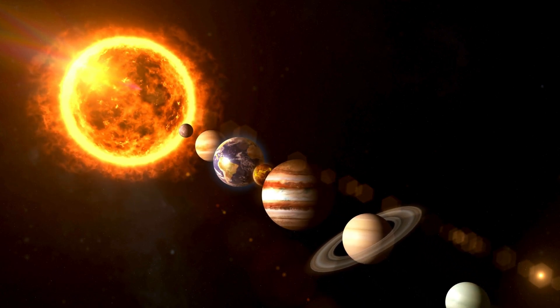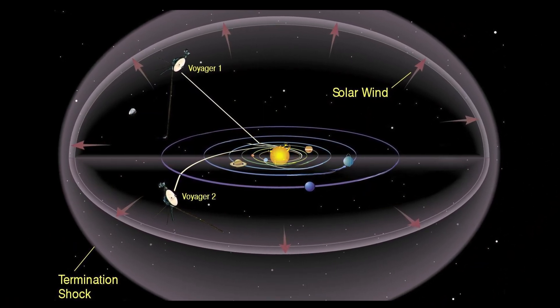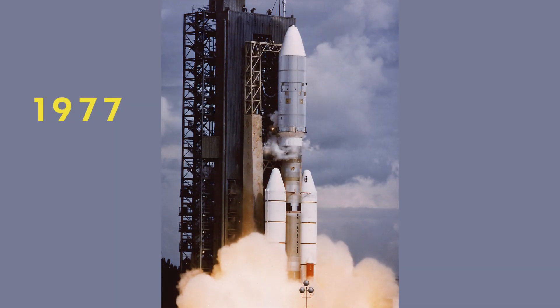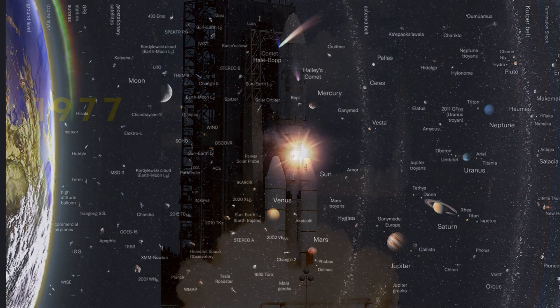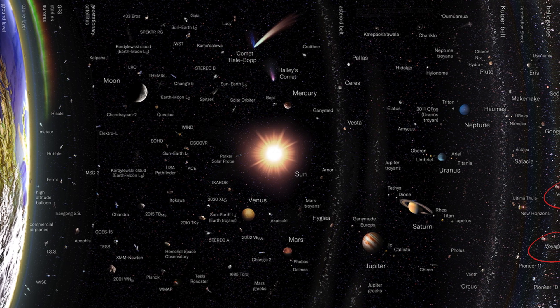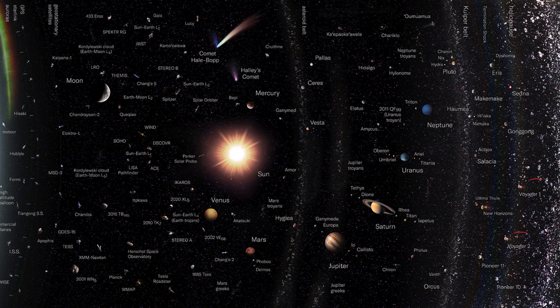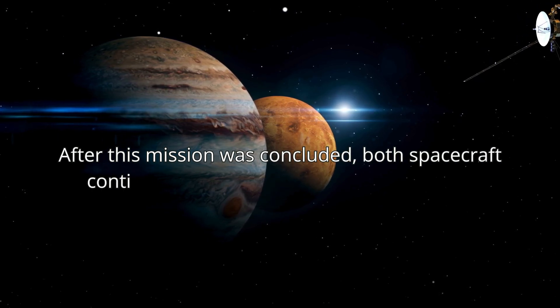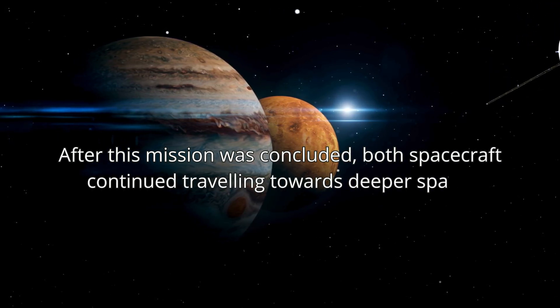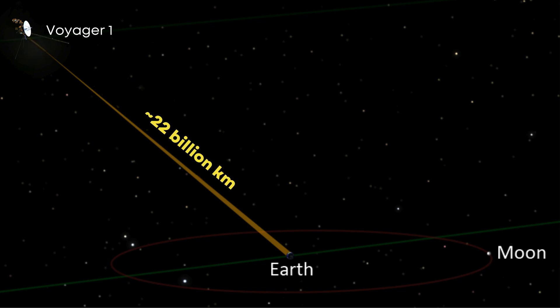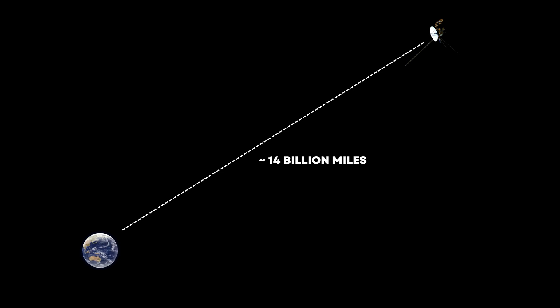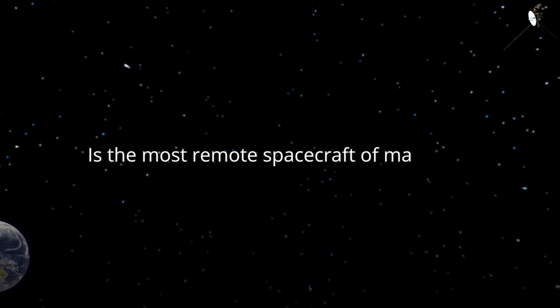Measuring our solar system, the fact that this solar system is huge could be illustrated by the two Voyager probes. Launched from Earth in 1977, the two spacecraft were intended to explore the outer planets of the solar system. After this mission was concluded, both spacecraft continued traveling towards deeper space. As of today, Voyager 1 is at a distance of 22 billion kilometers, or about 14 billion miles away from Earth, and is the most remote spacecraft of mankind.